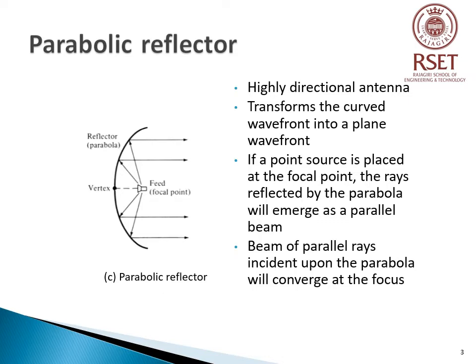Figure shows a Parabolic Reflector, which is a highly directional antenna. The feed or source is kept at the focal point, and the position of the vertex is also shown in the figure. The parabola reflects the waves originating from the source at the focal point into a parallel beam, thus transforming the curved wavefront from the source into a plane wavefront. The operation can be in transmitting or receiving mode. If a point source is placed at the focus, the rays reflected by the parabola will emerge as a parallel beam. Similarly, if a beam of parallel rays is incident upon the parabola, the radiation will converge at the focal point.